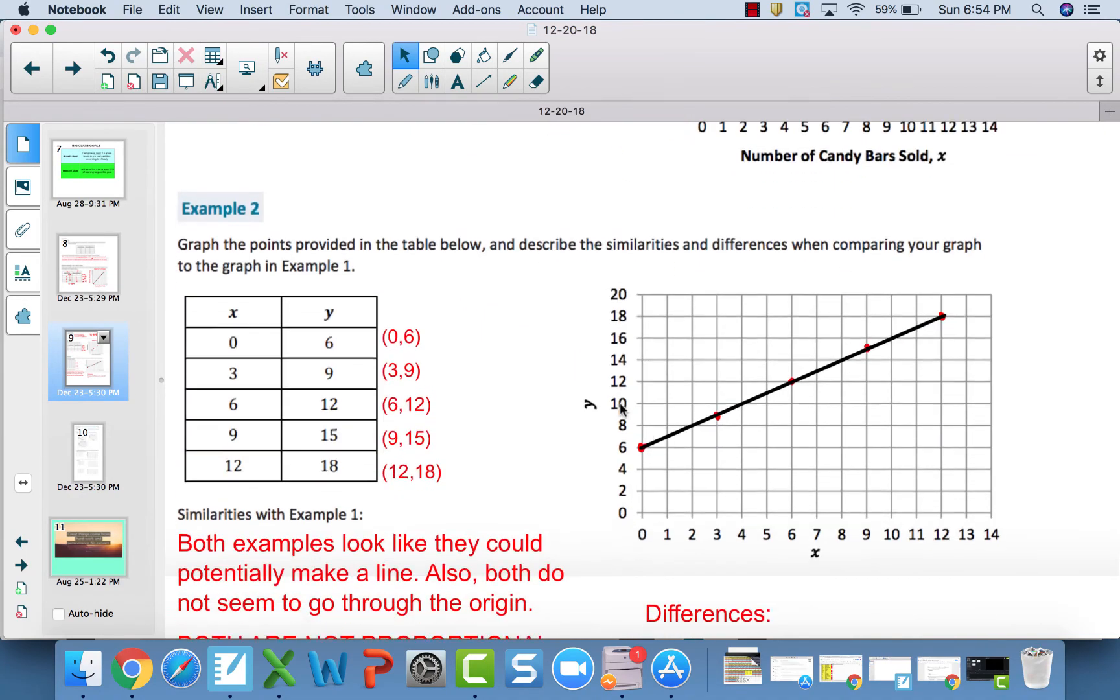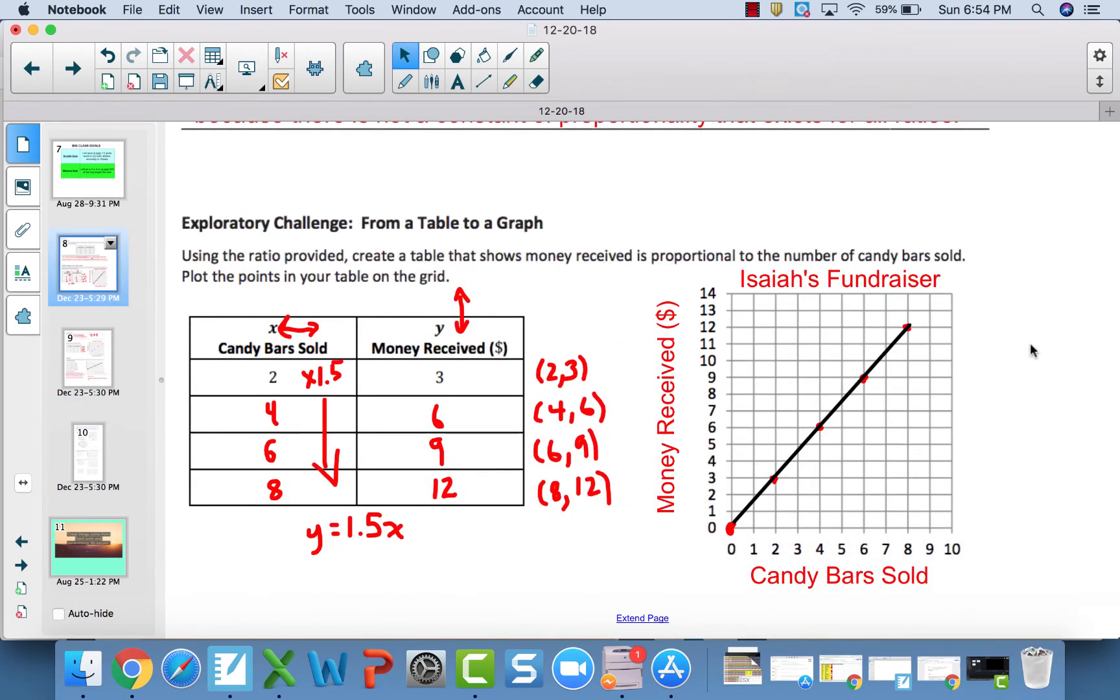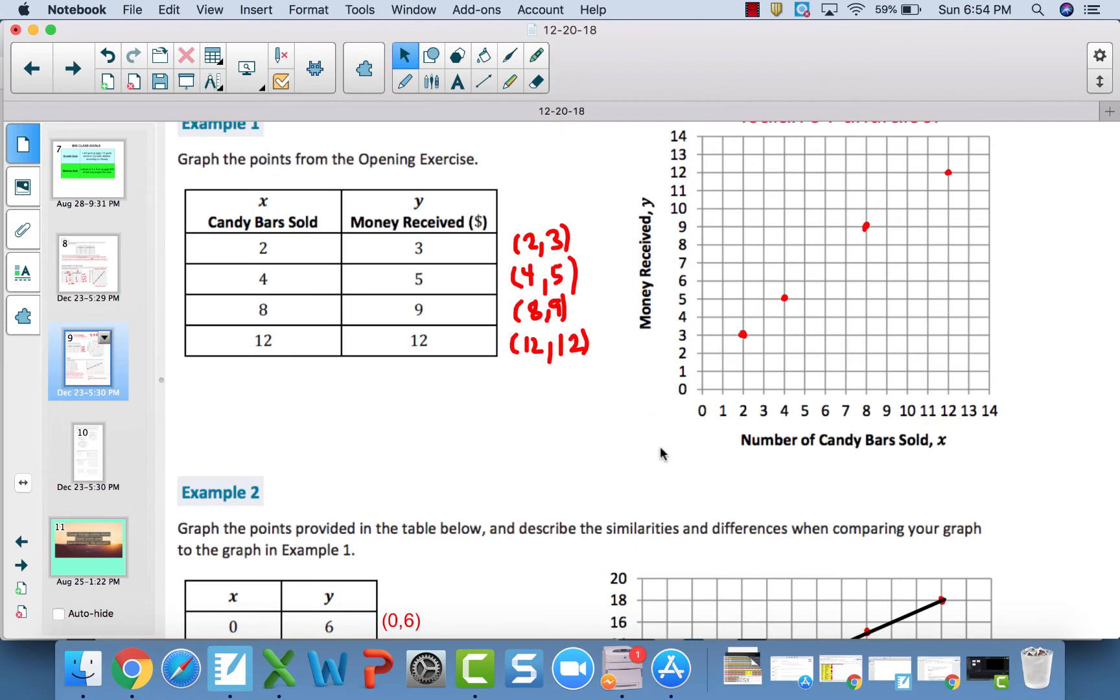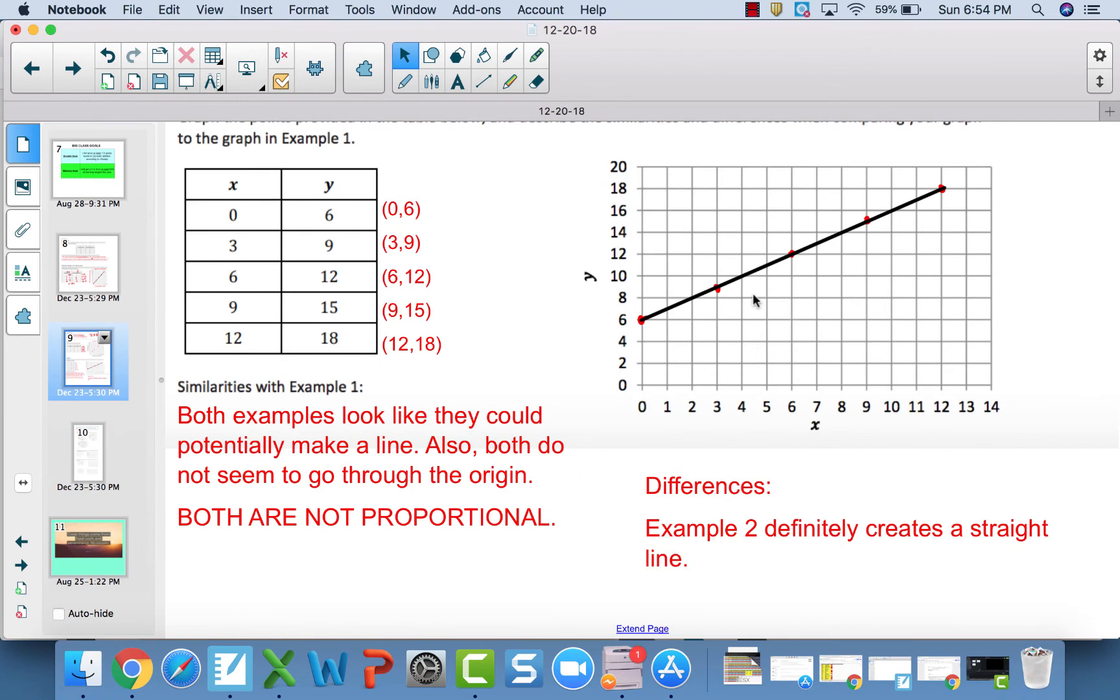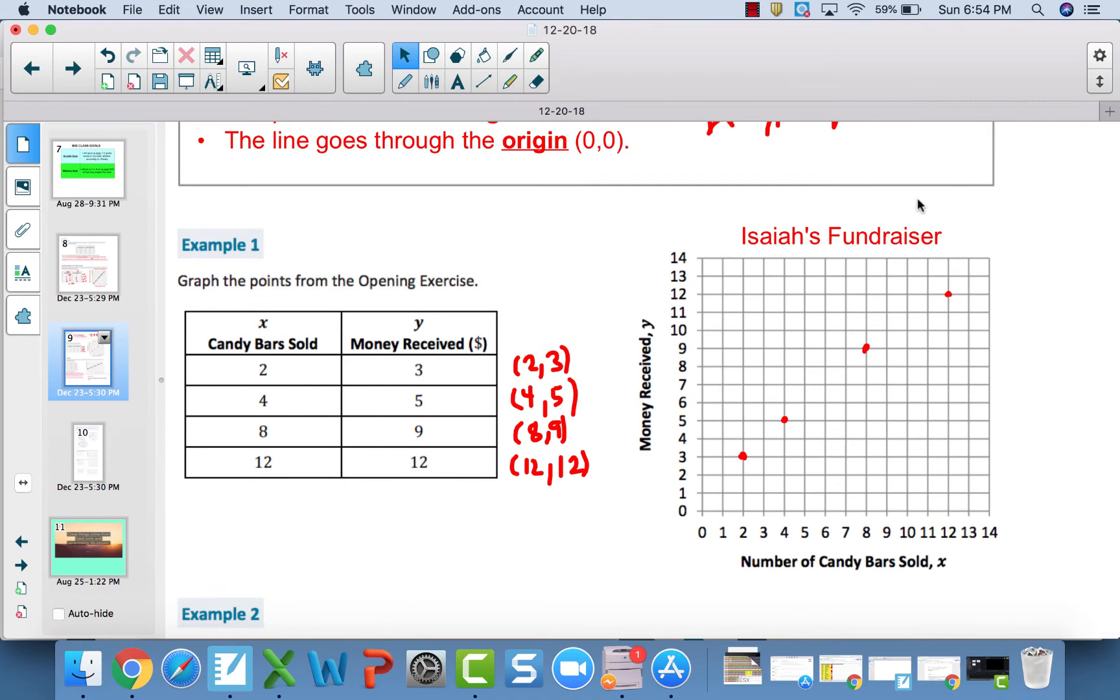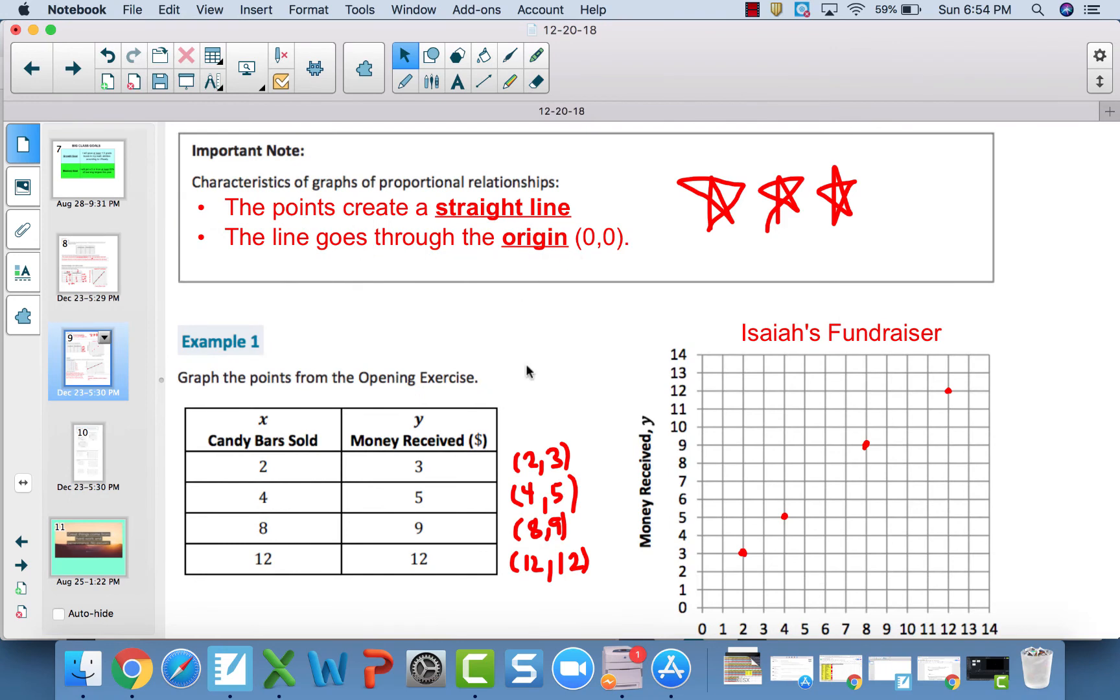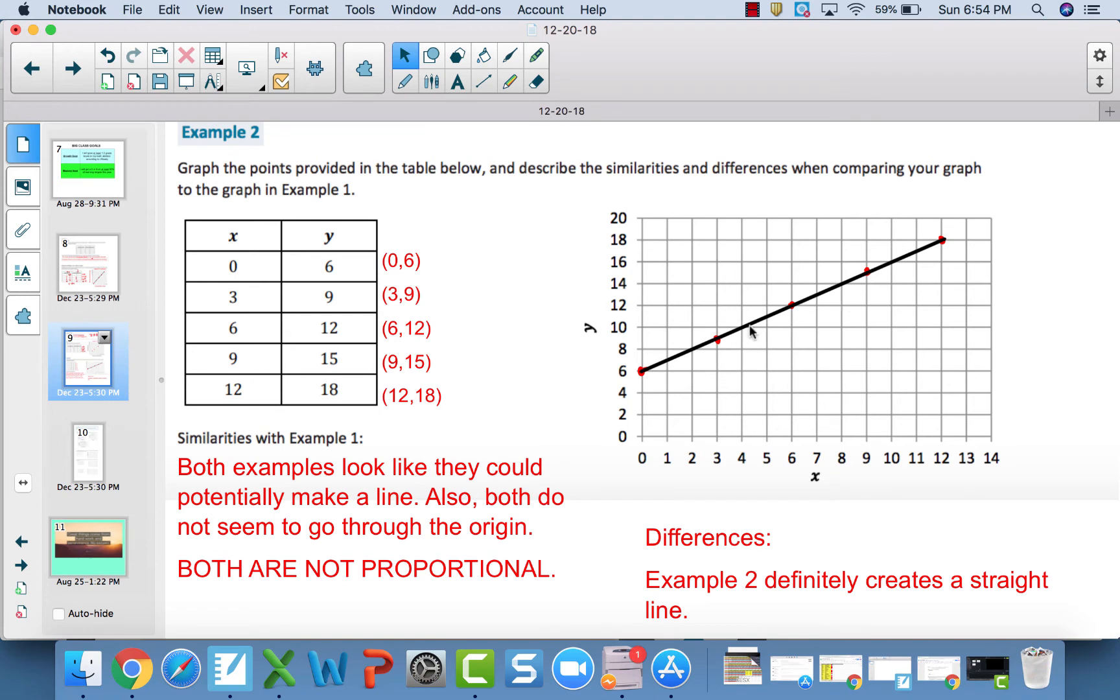Out of the three problems we have graphed, the only one that is proportional is this one. You can see it starts at zero—0, 0 is called the origin—and it creates a straight line. These other two examples either are not fully straight lines or do not go through the origin, or both. If it doesn't fit either criteria, like this example, then it's for sure not proportional. Example two just doesn't fit the second criteria—it does not go through the origin, although it does create a straight line. This makes it what is called linear. This is a linear relationship, but it is not proportional. It is a straight line, but not proportional.